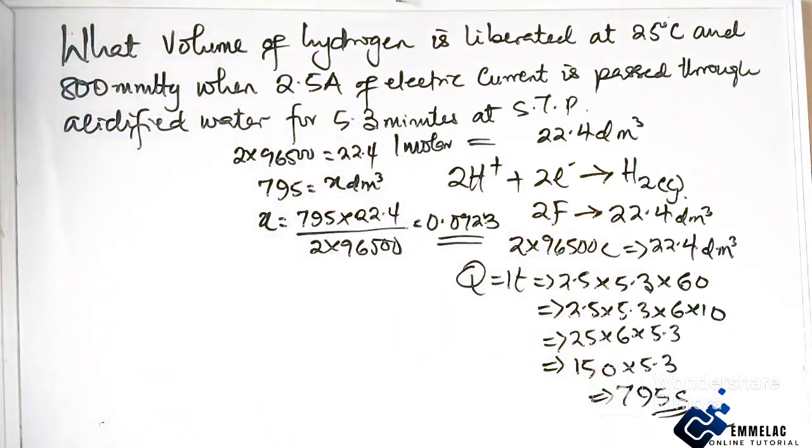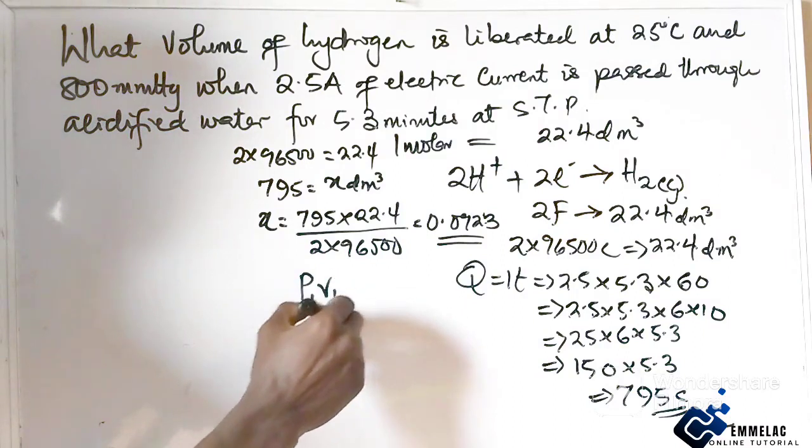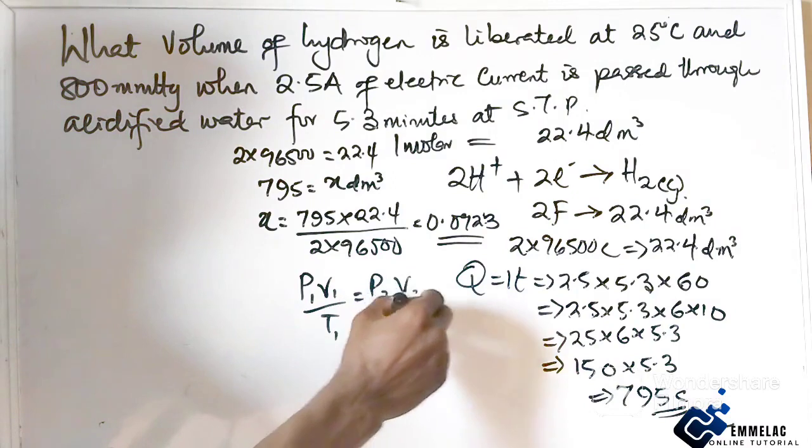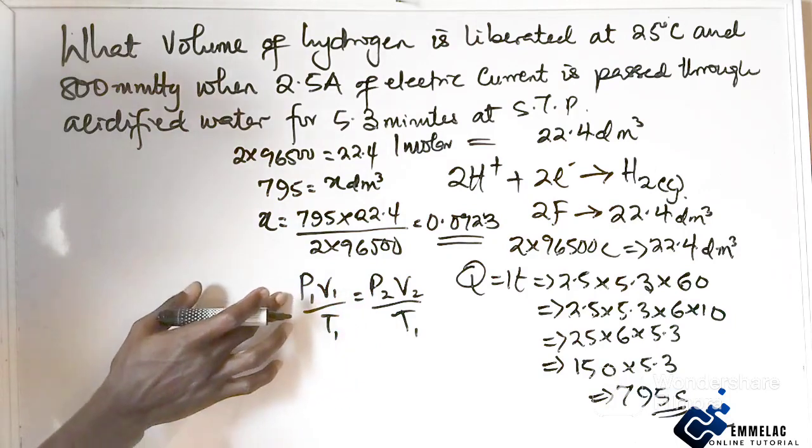Now that we've gotten this, let us recall P1V1/T1 equals P2V2 over T2. The ideal gas law, the general gas law.